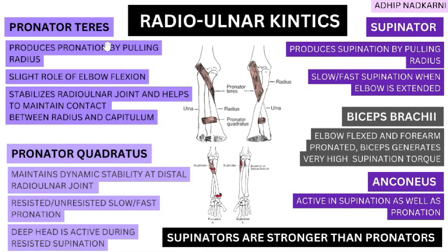Apart from creating pronation, the pronator teres also creates a slight amount of elbow flexion, as it crosses the elbow joint on the anterior aspect. It also stabilizes your proximal radioulnar joint and helps maintain the contact of the radius with the capitulum of your humerus, providing stability at the proximal radioulnar joint.